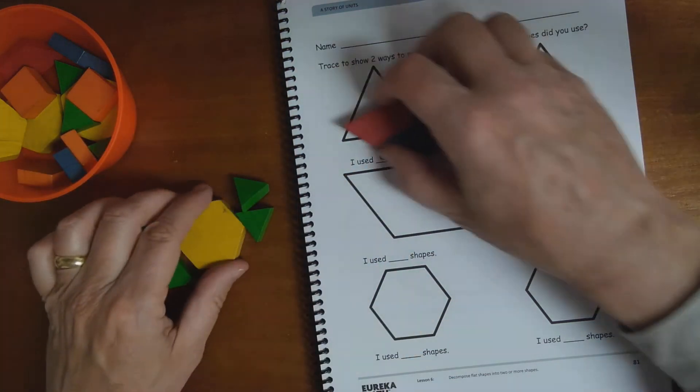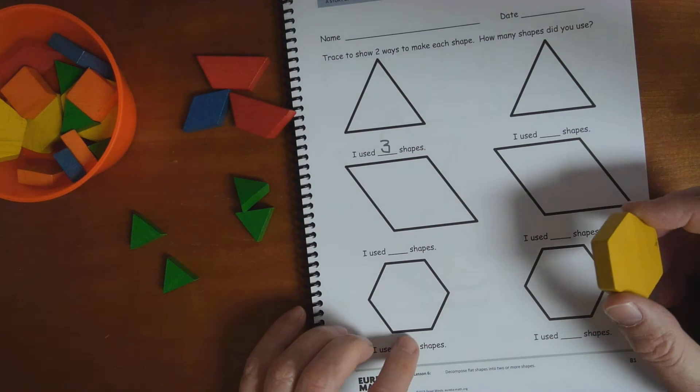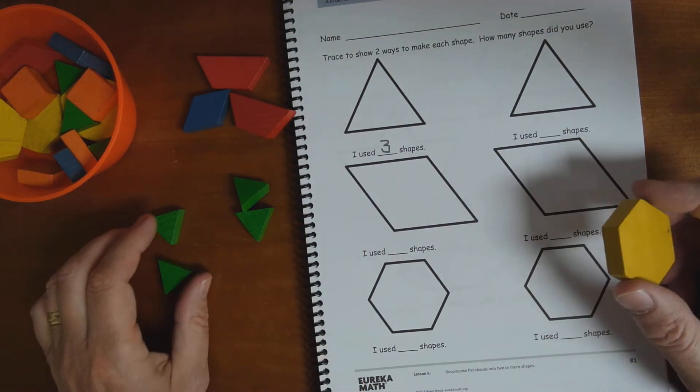Let's try and cover this shape. I could do that, right? That covers that up, doesn't it? And then I just use one shape. You don't have to draw any lines.